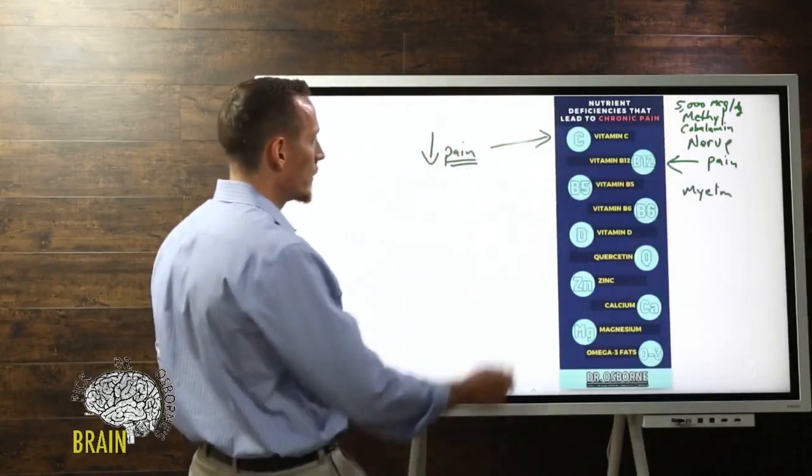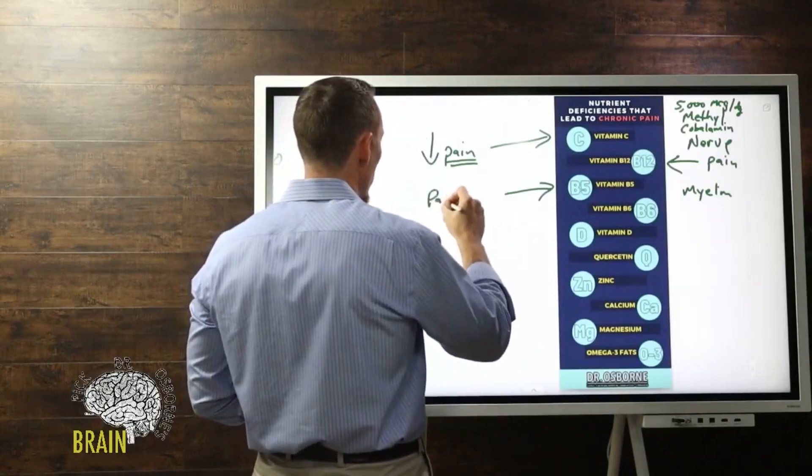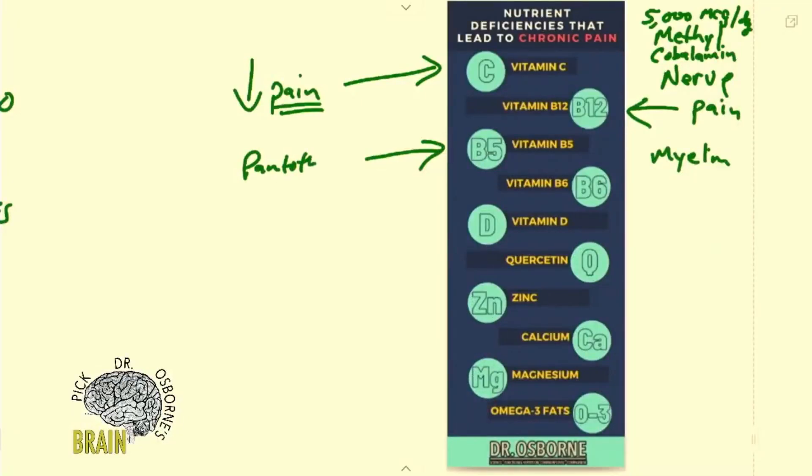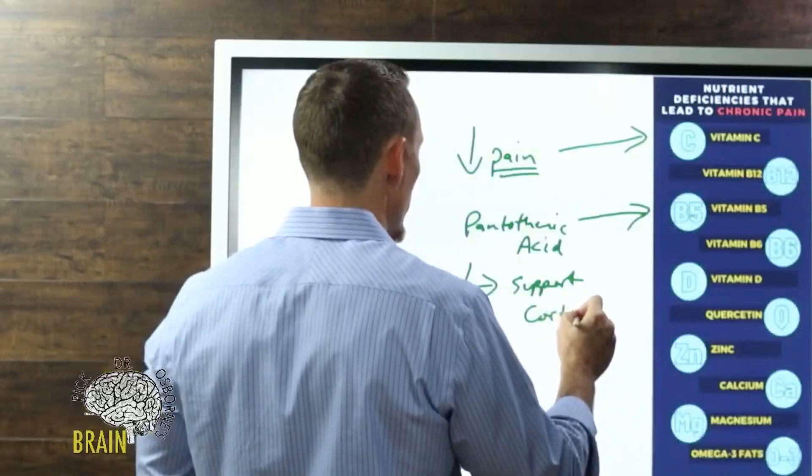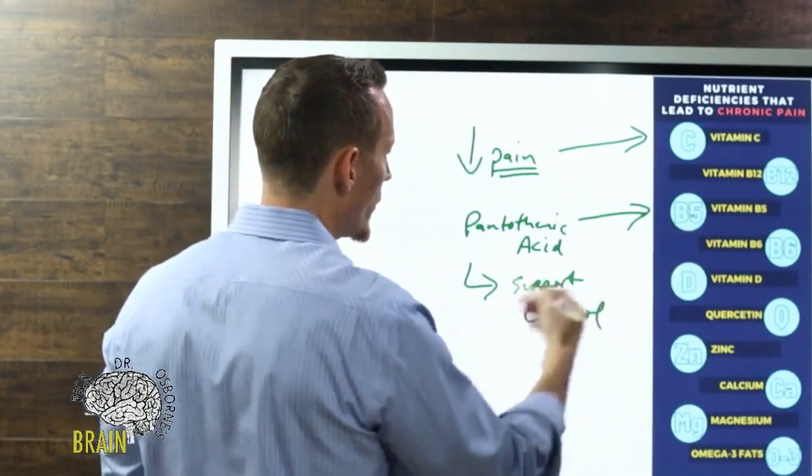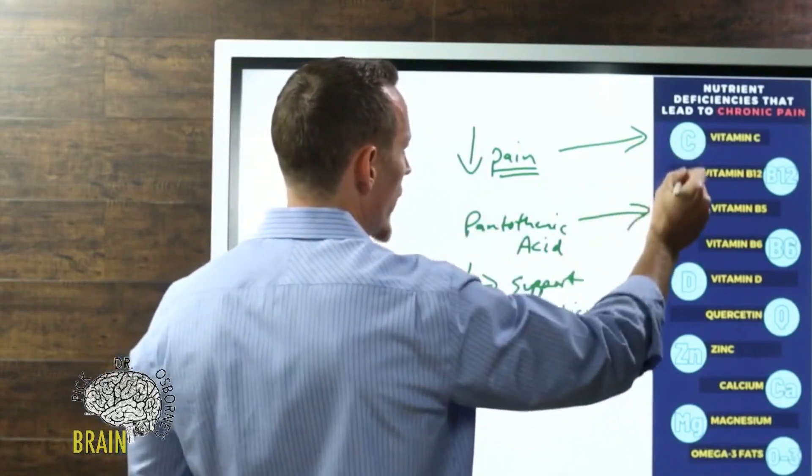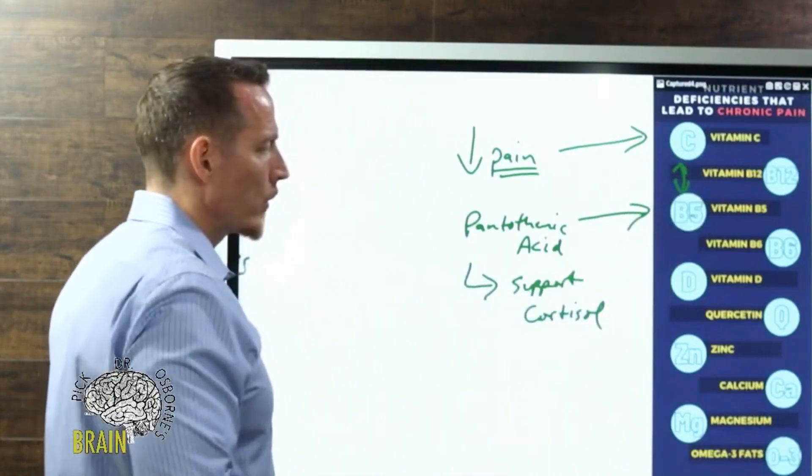Vitamin B5, otherwise known as pantothenic acid, can be effective for nerve and joint issues. Vitamin B5 is necessary to support cortisol regulation. Remember I was talking about cortisol earlier—too much or not enough can create problems. One of B5's functions is in the regulation of cortisol, same thing with vitamin C. These two actually play together to help support that normalization of cortisol.